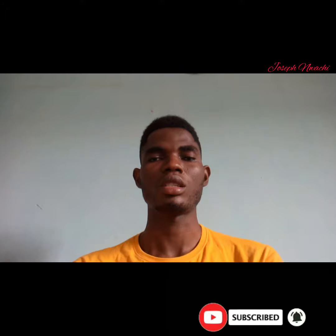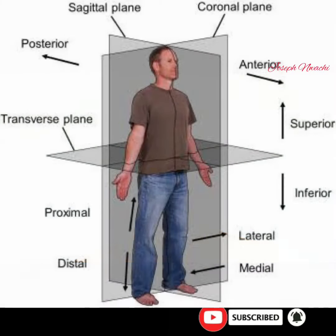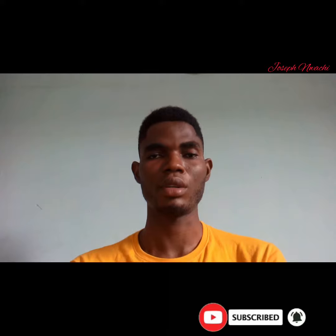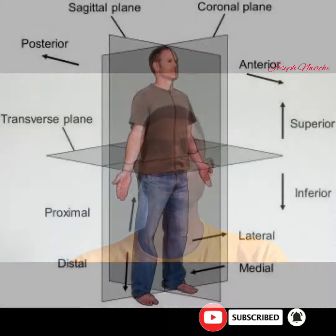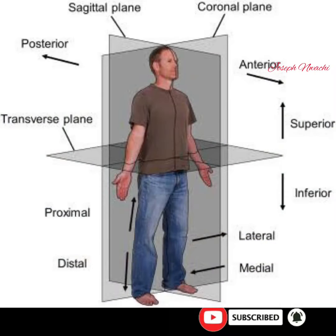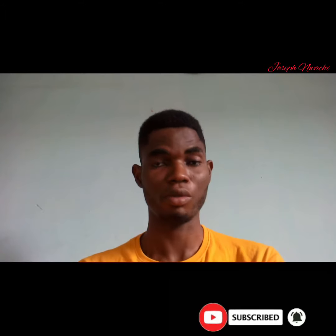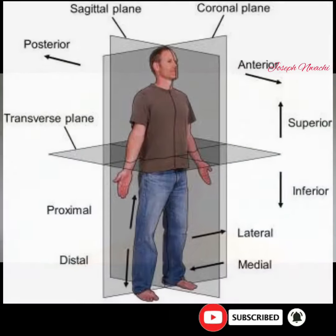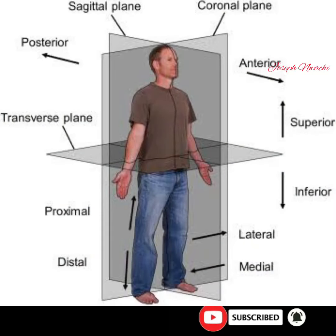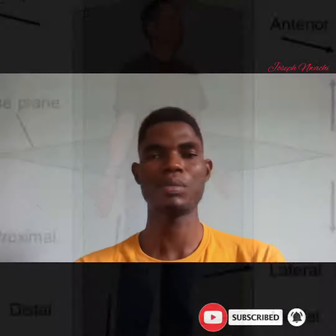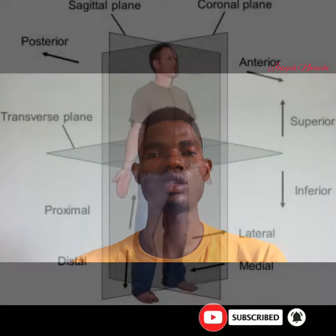There are three common planes: the sagittal plane, the coronal plane, and the transverse plane. The sagittal plane is a vertical plane that divides the body into right and left sections, whereas the coronal plane is also a vertical plane but divides the body into front and back.